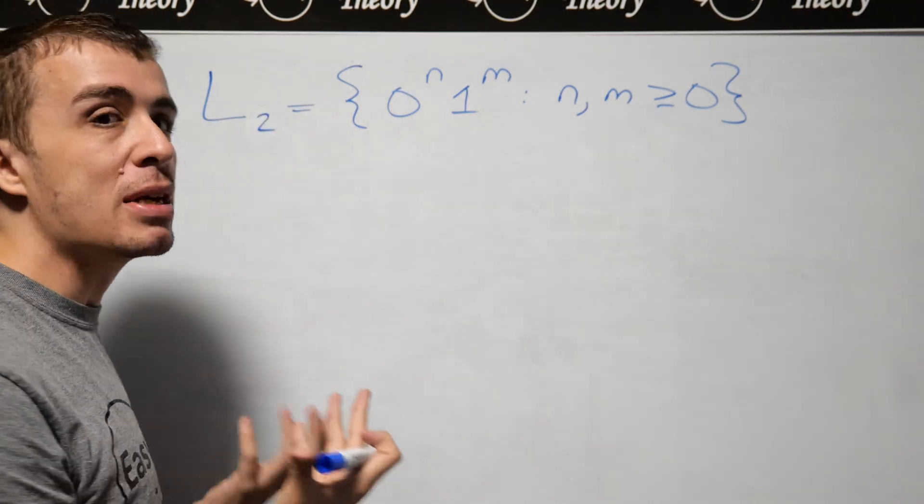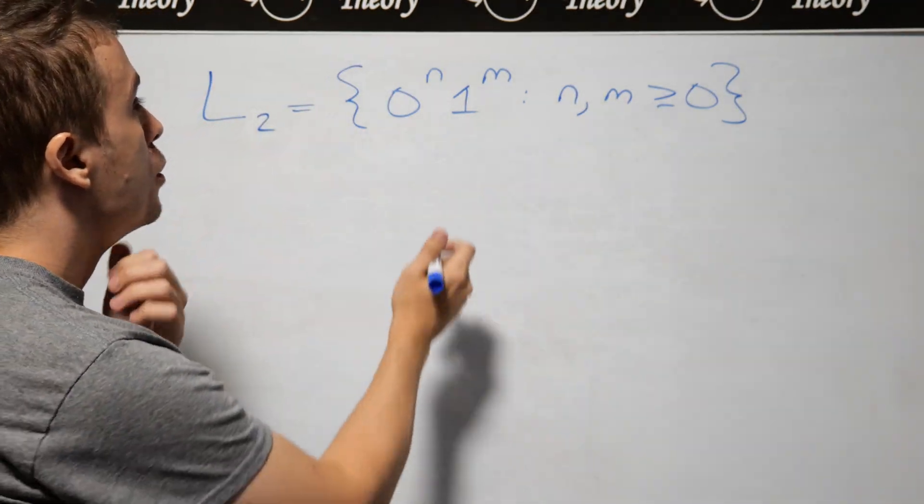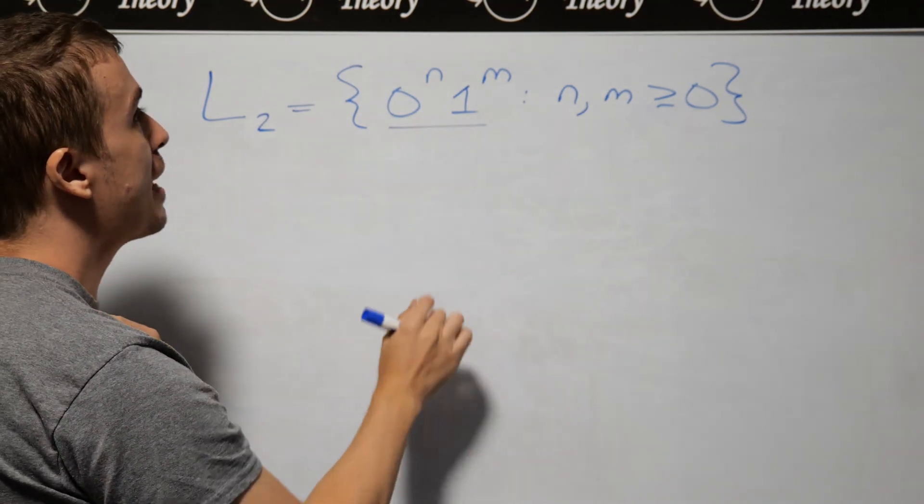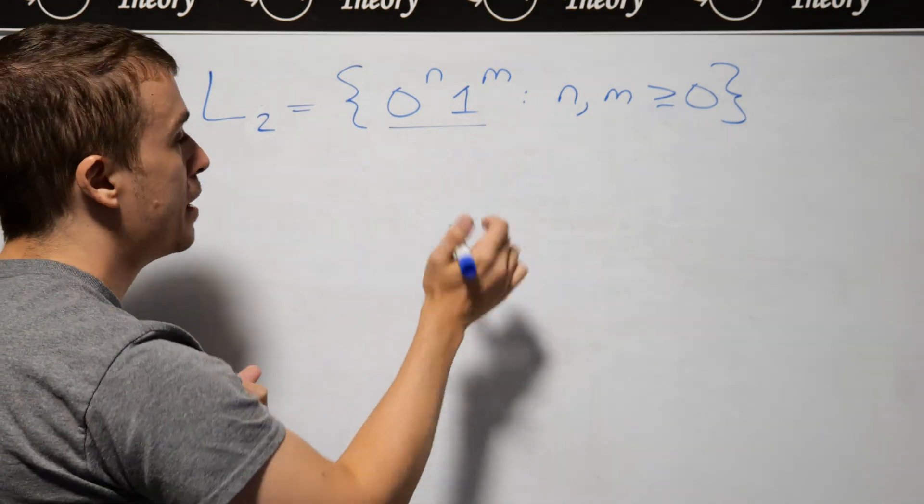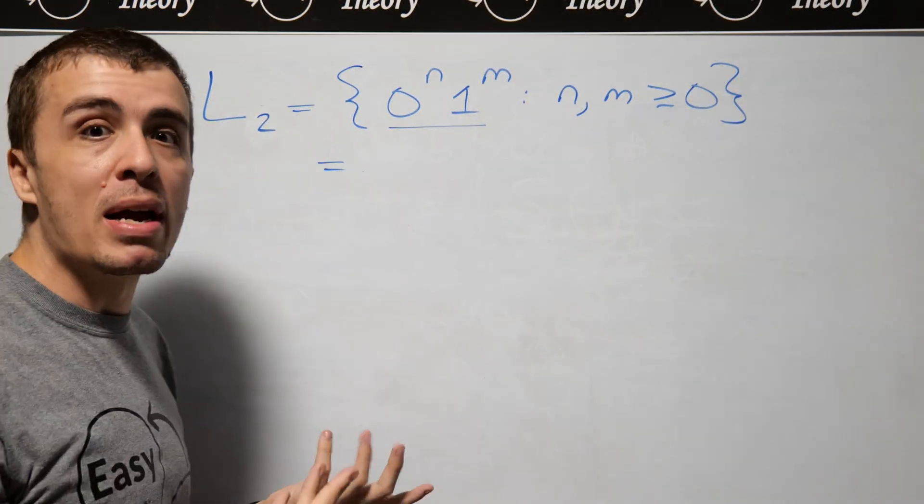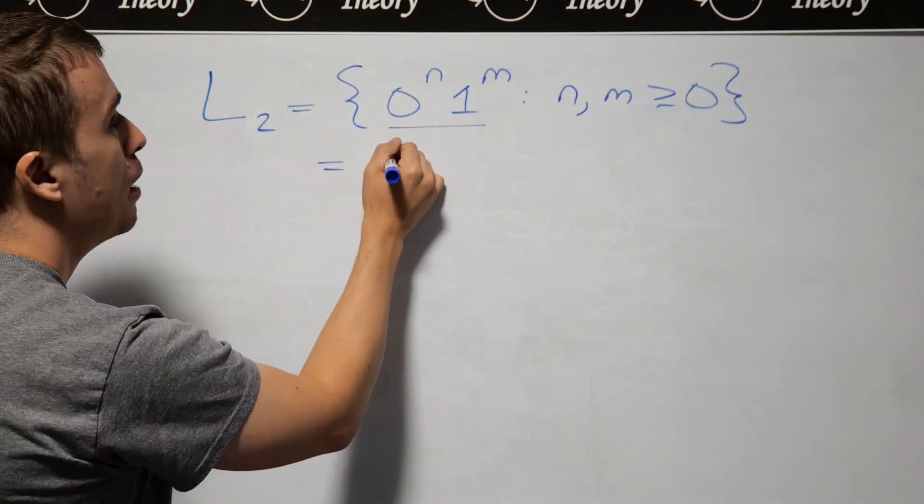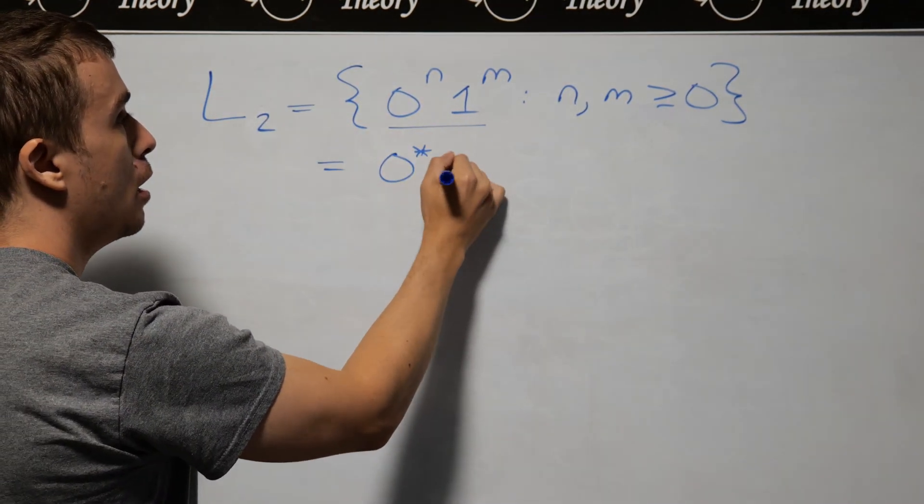Therefore we can treat them completely separately. Every string in this language always has some number of zeros at the start, and then some number of ones at the end. So we can actually write a regular expression for this. We can just say that it's 0 star 1 star,